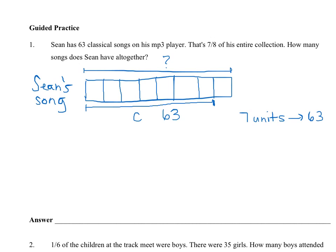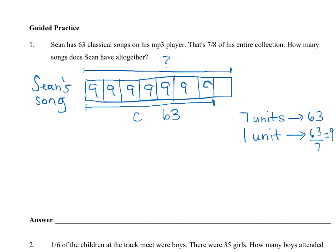I want to find out what just one of those units is worth. To do that, one unit gives me — what am I doing to get from seven to one? I am using division. So seven divided by seven is one, and 63 divided by seven is equal to nine. So I know one unit is nine. That's nine, nine, nine, nine, nine, nine, nine, and nine.